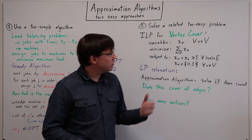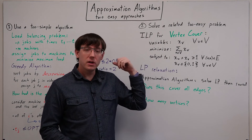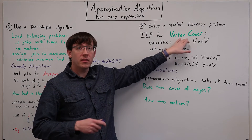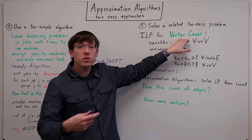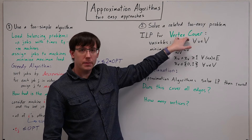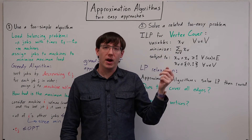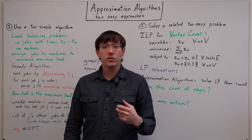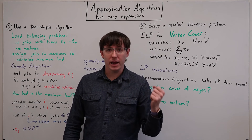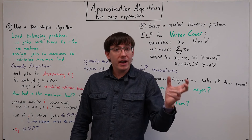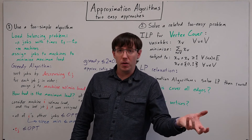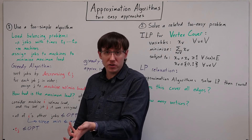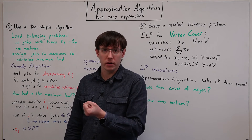But now turning to the second approach: sometimes we'll have an NP-complete problem that we don't know how to solve efficiently, but there's some related problem that we can solve efficiently. And so an approach to devising an approximation algorithm is to solve that related problem and use that to give us an approximate solution for the hard one.